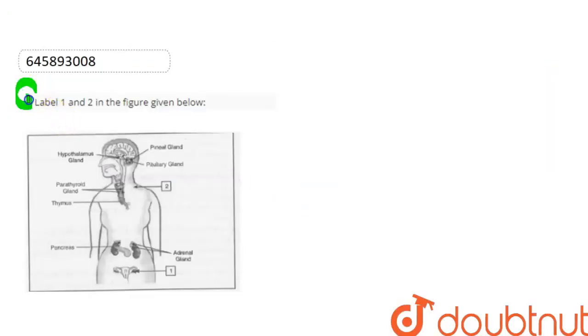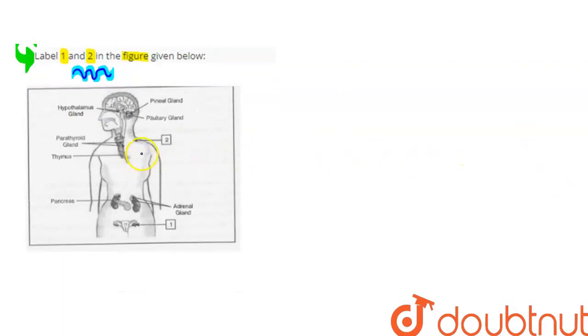Hello students, let's start the question. The question here is label 1 and 2 in the figure given below. So we have to label 1 and 2 here. You can see this is the diagram which illustrates endocrine glands.